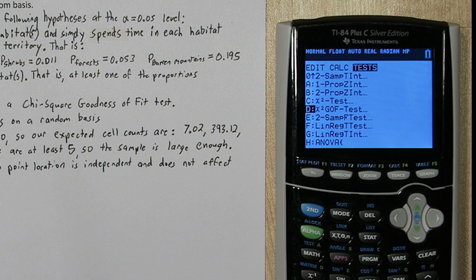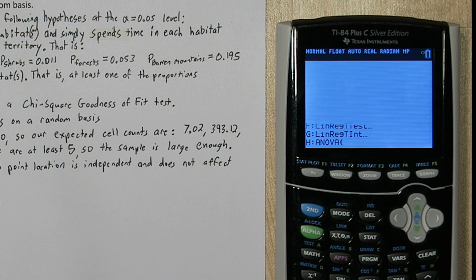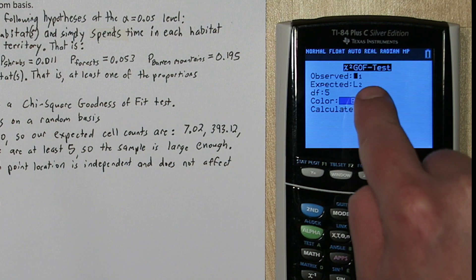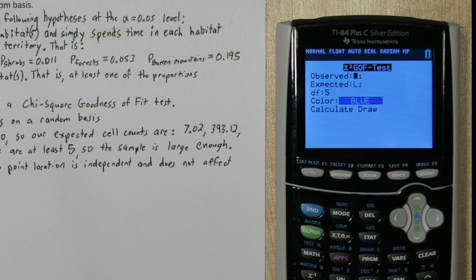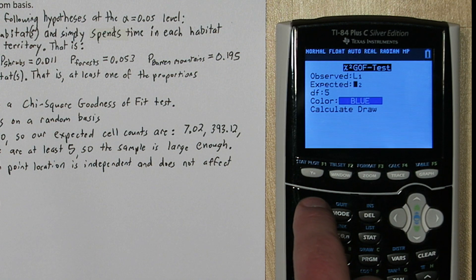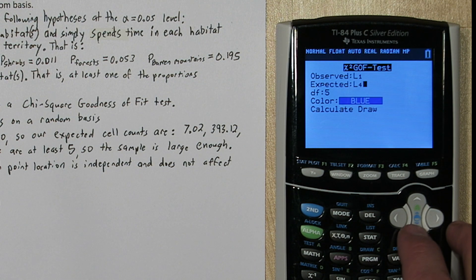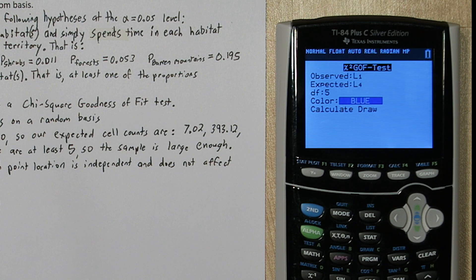If you press the stat button and go over to test, down near the bottom, option D on this calculator is the chi-square goodness-of-fit test. So it says where are your observed counts, in list one. Where are your expected counts, ours are in list four. And it says how many degrees of freedom do we have? We have four degrees of freedom, because there was five habitats, minus one.